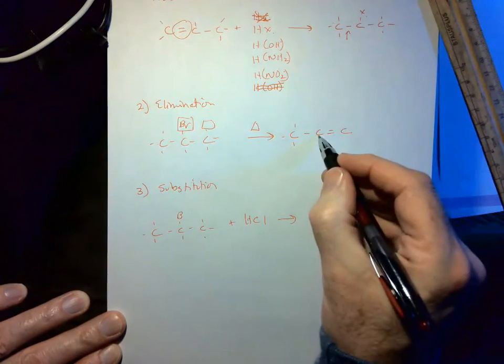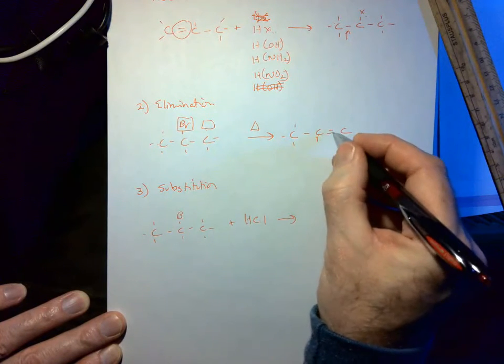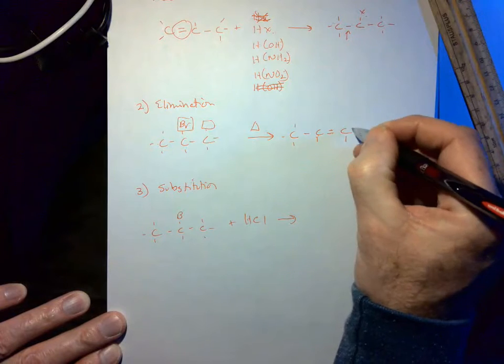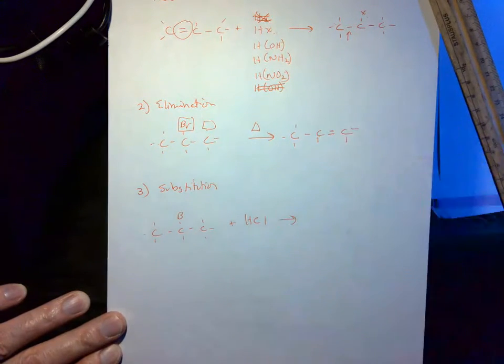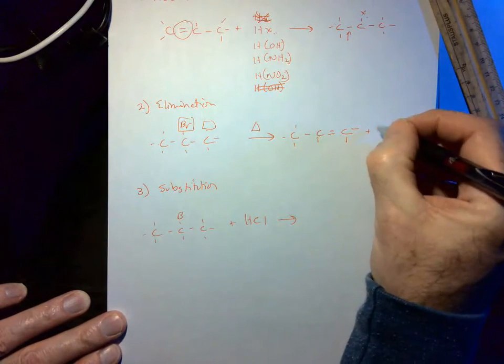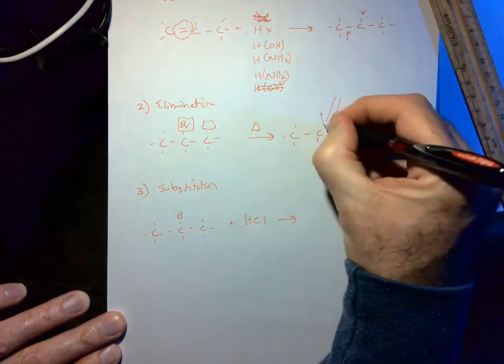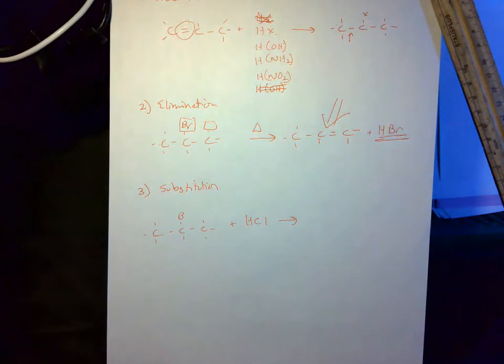Now remember, carbon always needs four bonds. One, two, three, four. And so this one would have one, two, three, four. We don't care about this molecule here. We're focusing on the carbon chain always.